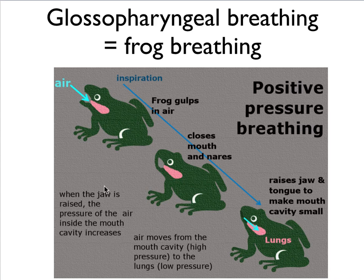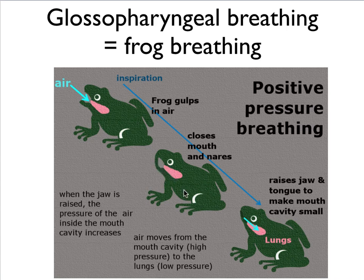So how do frogs breathe? When frogs open their mouths, air moves in. They close their mouths again and then move their tongue and jaw upward to make the space inside the mouth smaller. The pressure increases, and since the mouth is closed the air cannot go out — it can only go downward into the lungs. This type of breathing is also called positive pressure breathing.